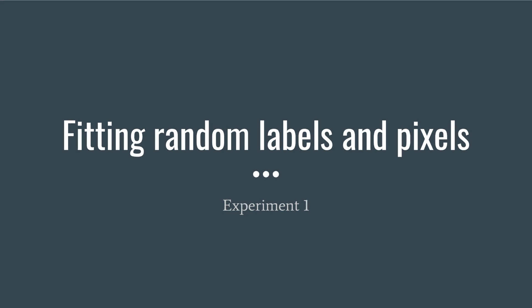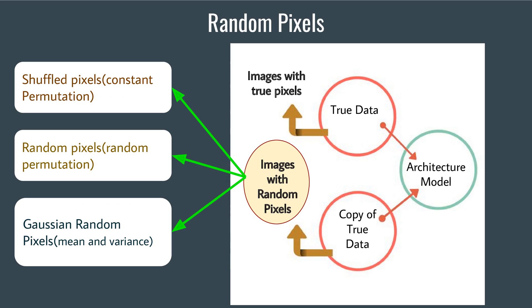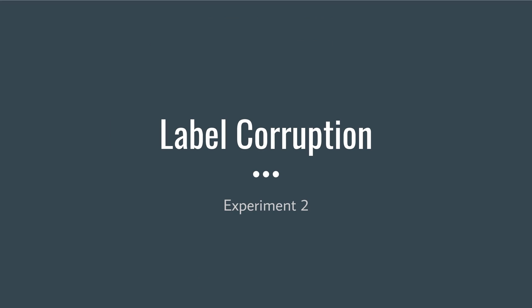Let's talk about fitting random labels and pixels. As a first set of experiments, they took a candidate architecture model and trained it on true data and a copy of this true data in which the true labels were replaced by random labels. In the second set of experiments, the image data were either permuted or replaced by random pixels. They observed that with random labels, once the fitting starts, it converges quickly and fits the training set perfectly without changing the learning rate schedule. They also experimented by performing label corruption.